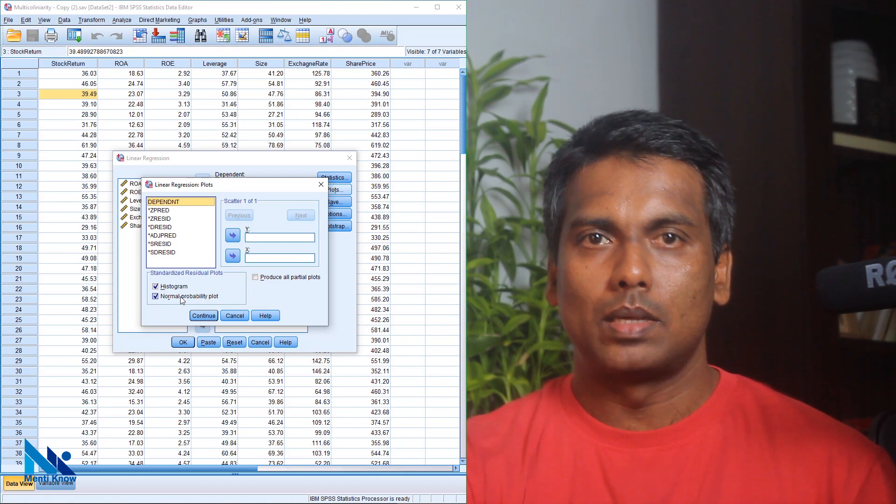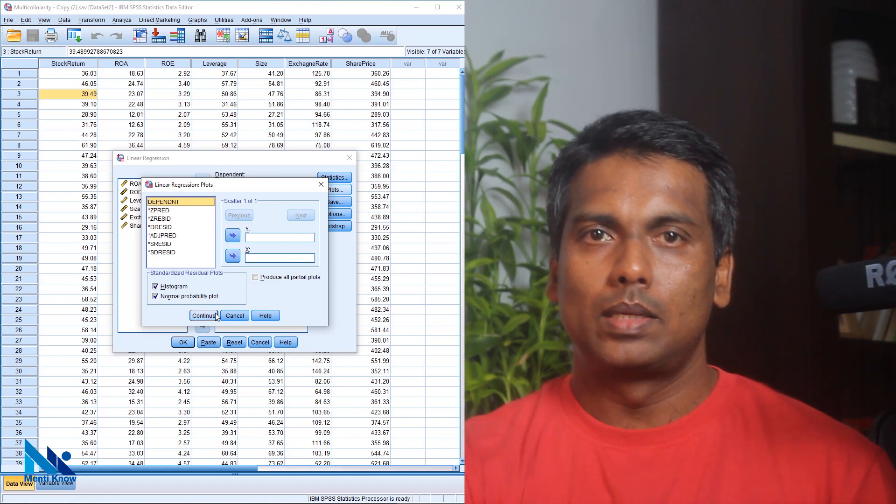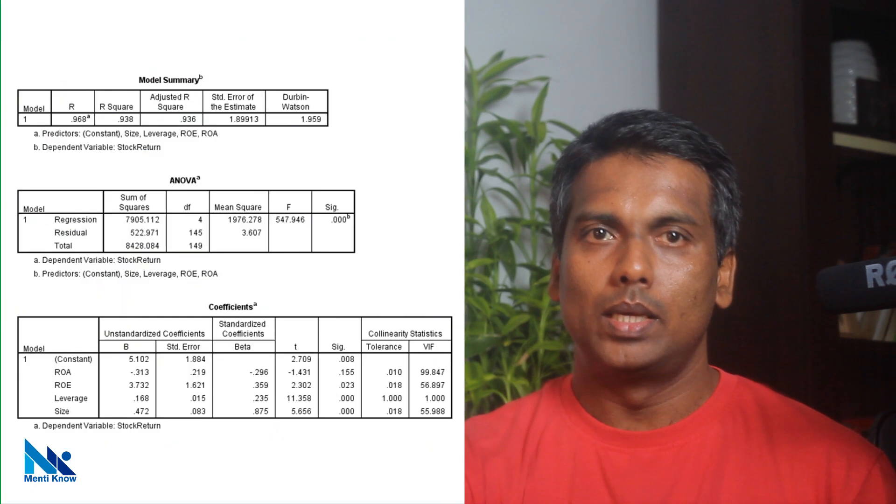Then click plots to generate histogram and normal probability plots to diagnose for normality in the residuals as well. I discussed about this normality assumption in my second video of this series. So if you need more details, watch it. The link is available in the below description. Then click continue. Then click OK here.